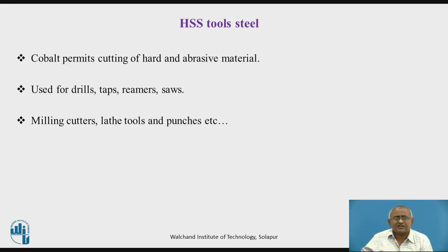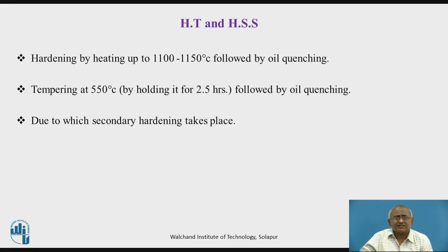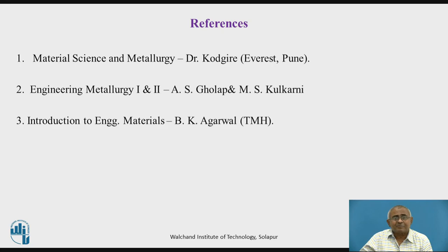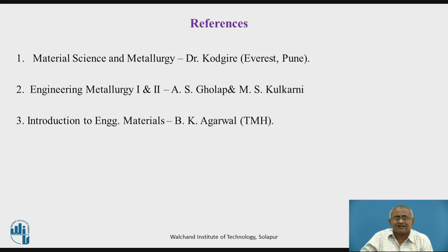Applications of HSS include the manufacture of drills, taps, reamers, saws, milling cutters, lathe tools, and punches. Hardening of these steels is carried out by heating to 1100 to 1150 degrees Celsius, followed by oil quenching and tempering at 550 degrees Celsius, due to which secondary hardening takes place. For further reading, I recommend Material Science and Metallurgy by Dr. Kodigire, Engineering Metallurgy volumes 1 and 2 by Kholap and Kulkarni, and Introduction to Engineering Materials by B.K. Agarwal. Thank you.